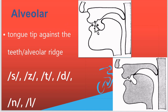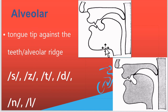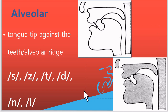Alveolar sounds: the alveolar area is the place just above the upper teeth, called the alveolar ridge. The tongue tip will be somewhere near the alveolar ridge — it may either touch or be very near. The sounds S, Z, T, D, N, and L are alveolar sounds. In T and D the tongue touches; in S and Z the tongue is near; in N and L the tongue also touches the alveolar ridge.